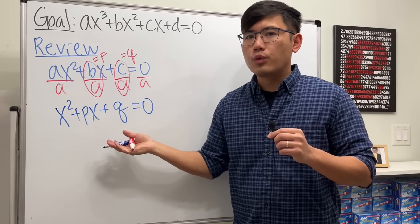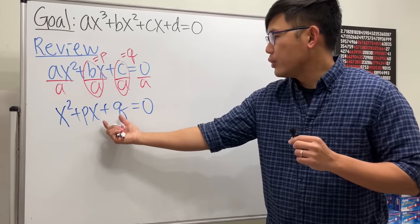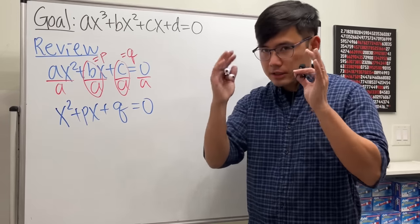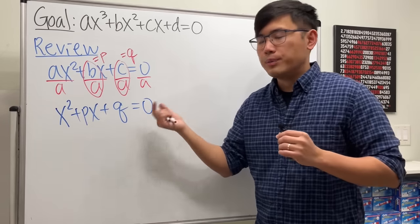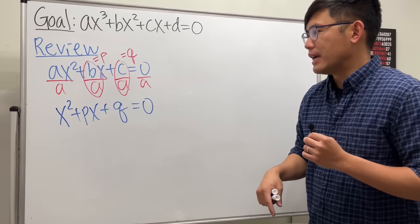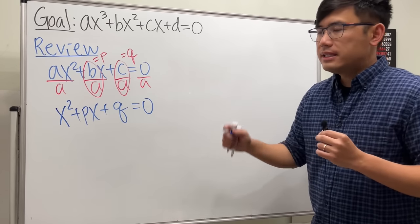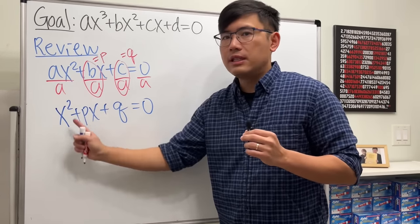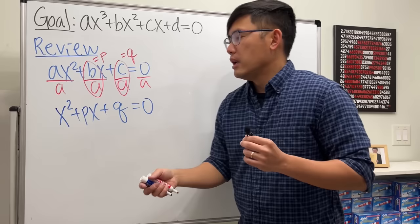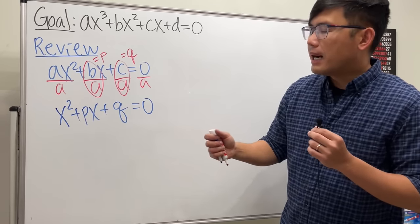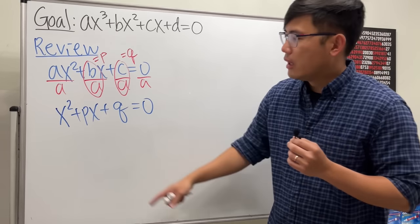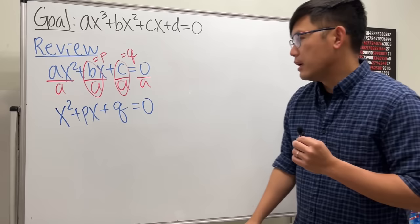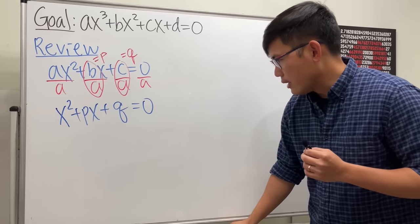You can try to complete the square the usual way — put the q to the other side and add (1/2)p² to both sides — but I'm not going to do that. Instead, let's take a look: if you graph this thing right here it's a parabola, and in fact it's possible to move it around horizontally to get rid of the x to the first power term.